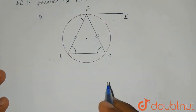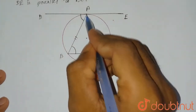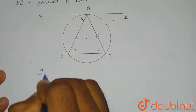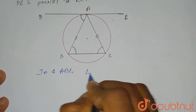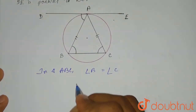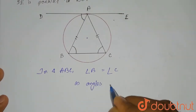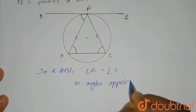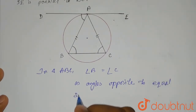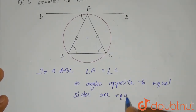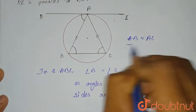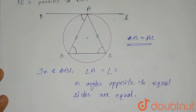As these two sides of the triangle are equal, we can say that angle ABC equals angle ACB. So in triangle ABC, angle B equals angle C. Why? Because angles opposite to equal sides are equal. It is given that AB equals AC.